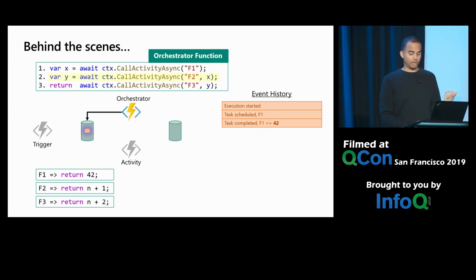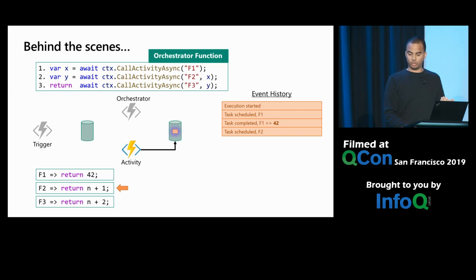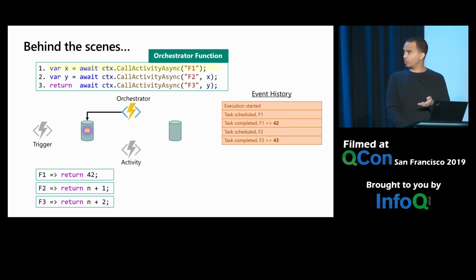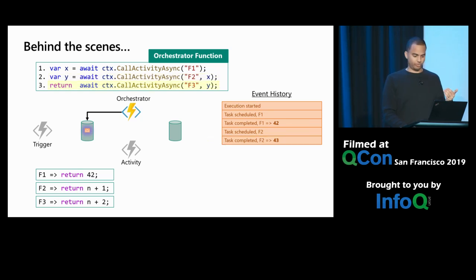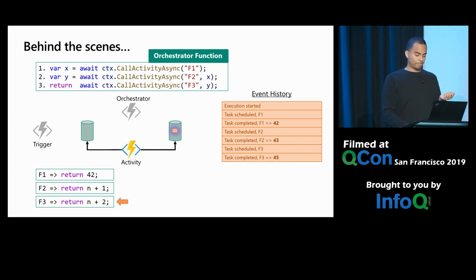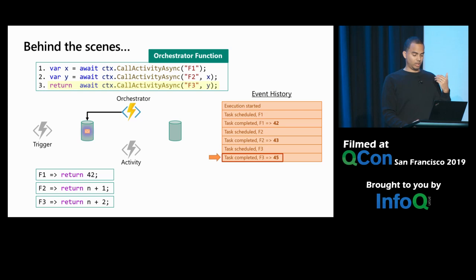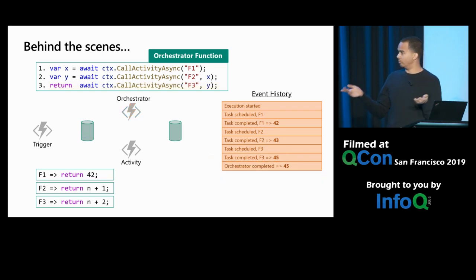Now we call f2 — we haven't called it yet, so we go through the same process: write a message, schedule it, execute it. f2 takes n+1, returning 43. We send the response back, update history, and the orchestrator starts from the beginning again, walking through the history: f1 returned 42, f2 returned 43, save into y, move on. Then f3 — scheduling, executing, adding two more, sending back the response. The orchestrator walks through history one final time, sees all functions have been called, and returns the final value of 45.